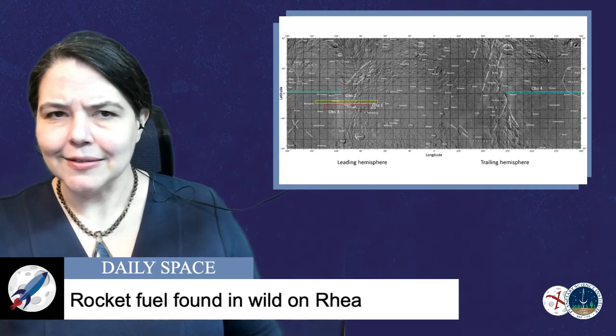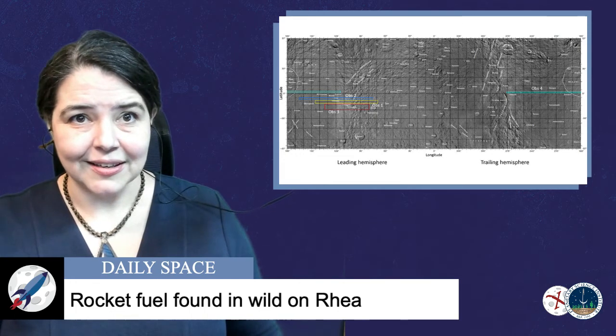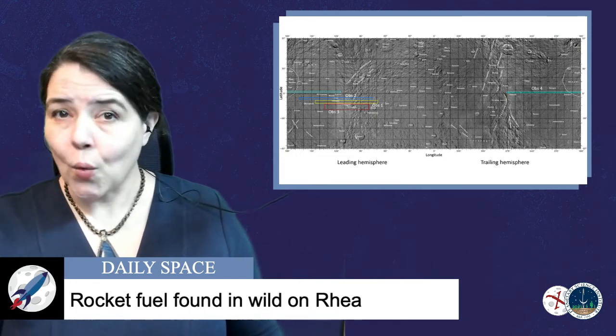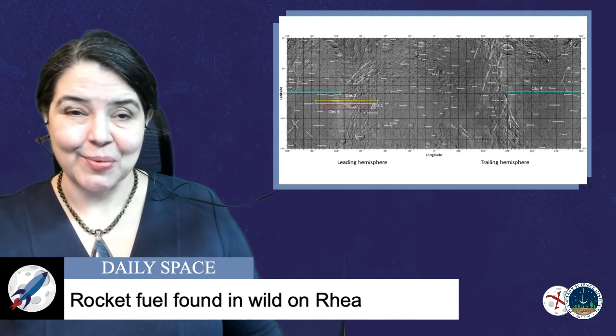So if the signal is from hydrazine, it's not fuel from the spacecraft. So how could hydrazine be formed on Rhea? That part is a bit unclear.